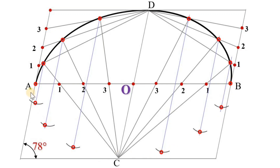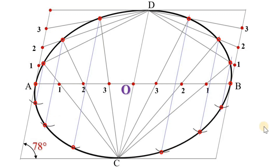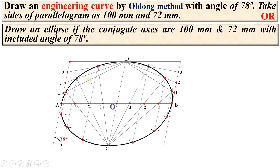Now join all the points by a smooth curve. This is your completed ellipse in the parallelogram. At the end, give the name of the curve, that is ellipse. Keep in mind the name of the method must be mentioned. This is known as the parallelogram method because the ellipse is drawn inside the parallelogram. It is almost similar to the rectangle method.